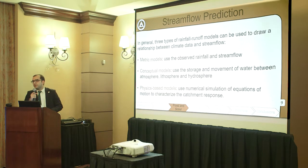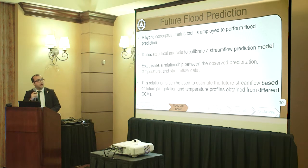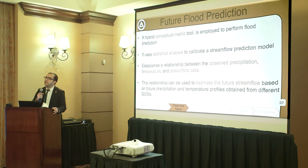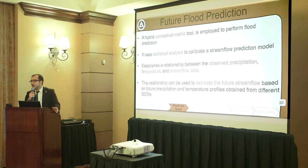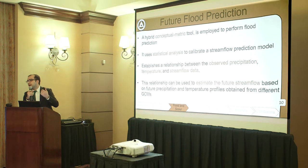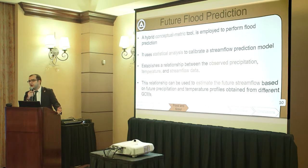Either of these methods can be used for stream flow prediction. In this study, we use the hybrid conceptual metric tool to perform flood prediction. This model uses statistical analysis to calibrate the stream flow prediction model by establishing a relationship between observed precipitation, observed temperature, and observed stream flow data. Using that relationship derived from historical data, we then adopt precipitation and temperature data from the global climate models to end up with future stream flow predictions.